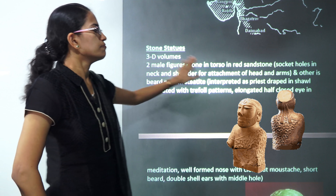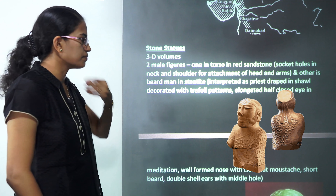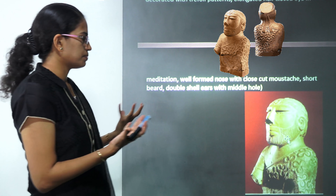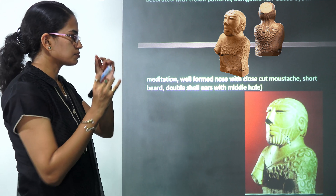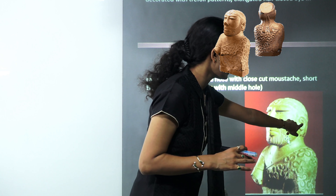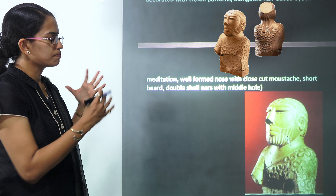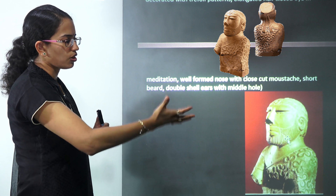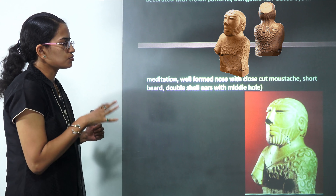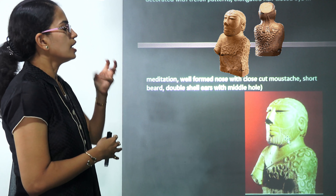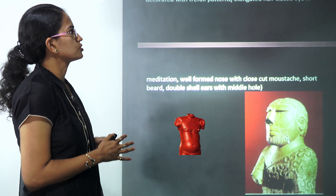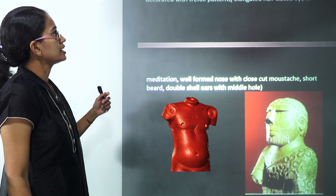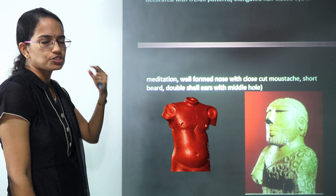Two classic examples of stone statues are: one, a torso in red sandstone, and the other, a bearded man in steatite. The bearded man shows a well-formed personality with a well-formed nose, half-closed eyes, a small mustache, and double-shell ears with a middle hole. He was interpreted as a priest draped with a shawl moving from left to right, decorated in a trefoil pattern. The torso had socket holes in the neck for a necklace, and attachments for hands and arms.